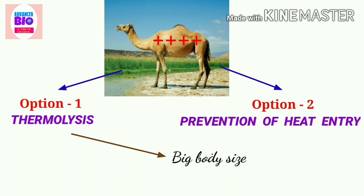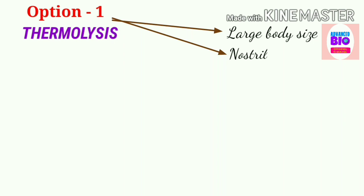And enlarged body surface loses more heat by radiation. Number two: nostril. The slit-like closable nostril protects against blowing sand. When the camel exhales, water vapor becomes trapped in their nostril and is reabsorbed into the body to conserve water. Thermolysis means the loss of heat from the body. Now I am discussing some physiological adaptations of camels.